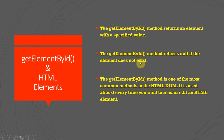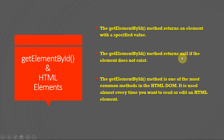If an element with a specific ID doesn't exist in the HTML page — there is no HTML element with that ID — in this case, the getElementById method will return null, nothing.